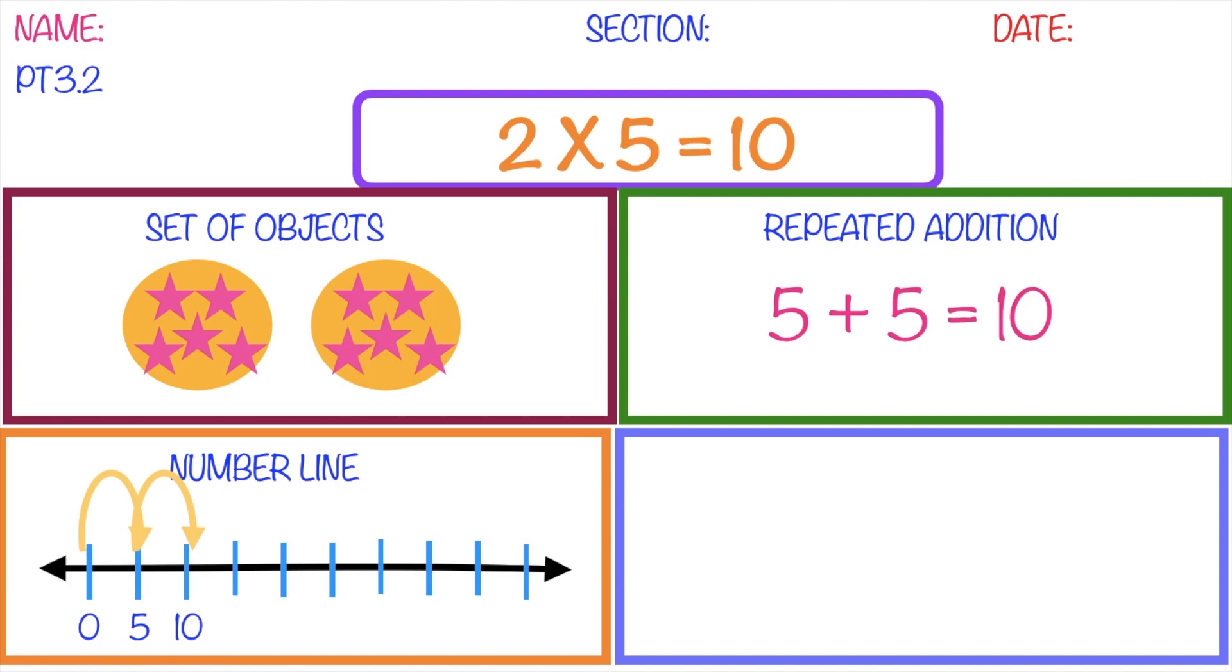Then on the last box, we're going to illustrate the multiplication sentence that you created using multiples. Multiples is like skip counting. So since our second factor is 5, we're going to write the multiples of 5 until we reach the second multiples. Because our first factor is 2. So we have 5, 10. That's it.